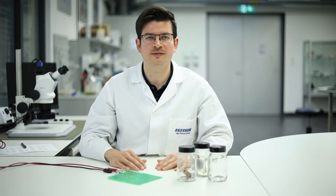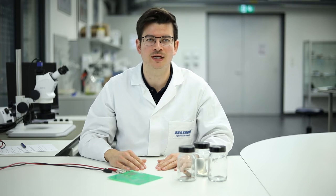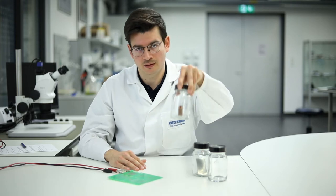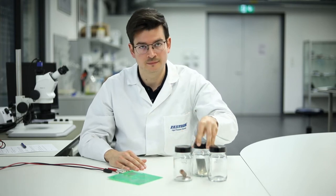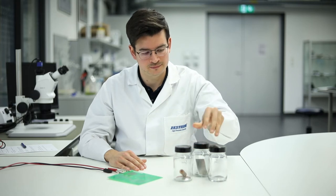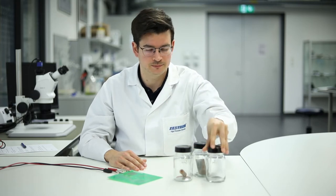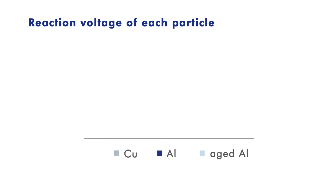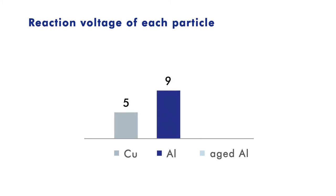We apply typical application voltages from 3 to 24 volts to 3 types of metallic particles commonly found on electronic assemblies: copper, aluminium, and aged aluminium. The chart shows the different behavior of each particle material. Copper reacts at 5 volts, aluminium at 9 volts, and aged aluminium at 15 volts. Analyzing the breakdown voltage would also be possible with the filtration residue.